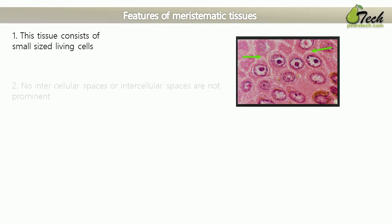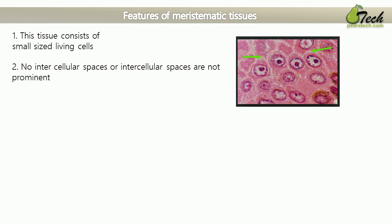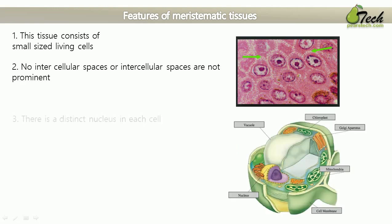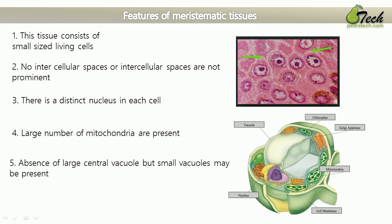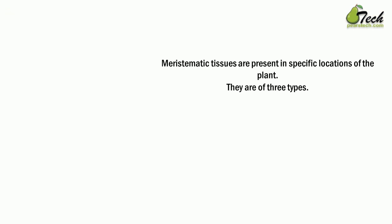The features of meristematic tissues: this tissue consists of small-sized living cells. There is no intercellular space — intercellular spaces are not prominent in these tissues. There is a distinct nucleus in each cell, and a large number of mitochondria are present. There is an absence of a large central vacuole, but small vacuoles may be present.